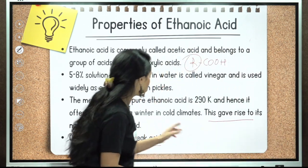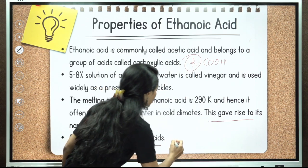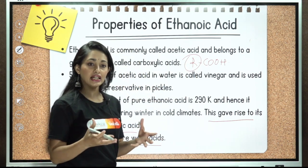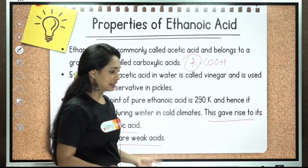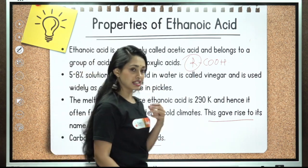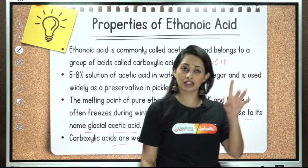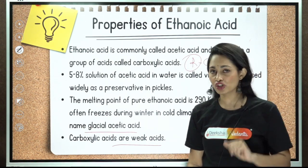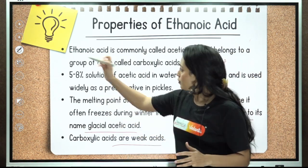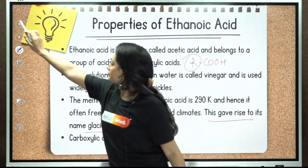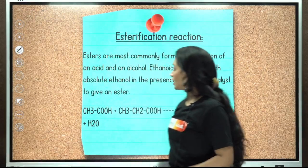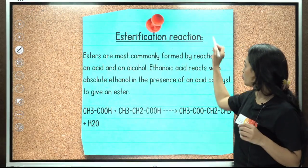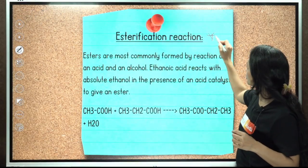Carboxylic acids are weak acids. Weak acids are those which dissociate incompletely. This is something we have discussed in the second chapter on acids, bases, and salts.